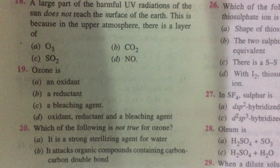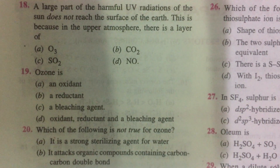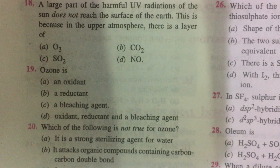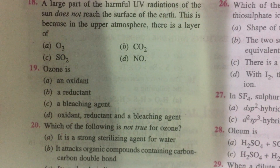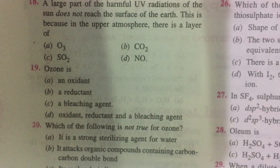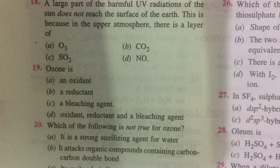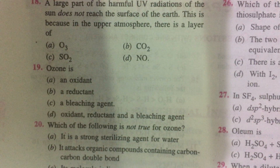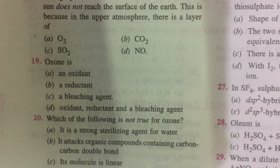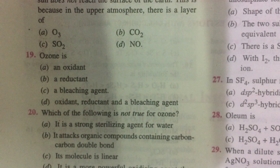A large part of harmful UV radiation from the sun does not reach Earth's surface because the upper atmosphere (stratosphere) contains a layer of ozone. Jet aeroplanes and freons are damaging this ozone layer. Ozone can act as an oxidant, a reductant, and a bleaching agent. When Ag2O reacts with ozone, Ag2O becomes metallic Ag — ozone is a reductant there. Treating water with ozone is better than using bleaching powder, as ozone purifies without leaving an unwanted smell.